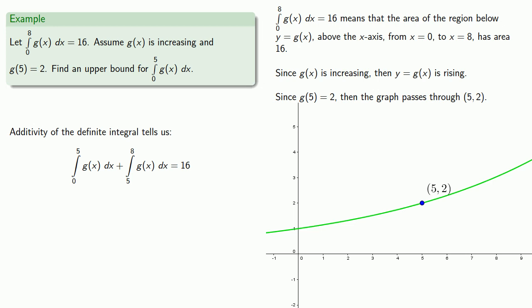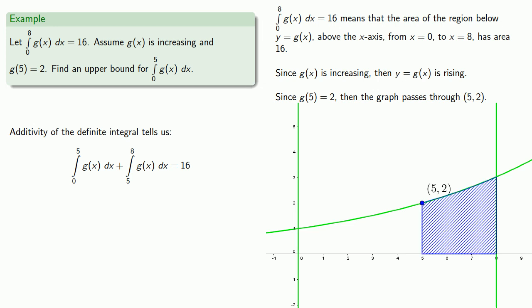Now this corresponds to the area under the graph between x equals 5 and x equals 8. Can we say anything about this definite integral? Well what if we use the lower rectangle? This lower rectangle is going to have area because its width is 3 and its height is 2. So the area of the lower rectangle is 6